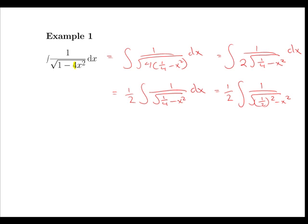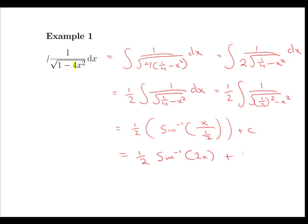Now we have the integral in the form 1 over the square root of a squared minus x squared. If we integrate this using the sine inverse rule, we get a half into sine inverse x over a, so x over 1 over 2, plus c. Tidying this up gives us a half sine inverse 2x plus c.